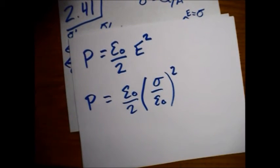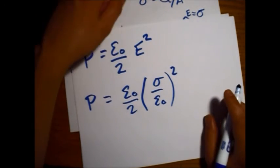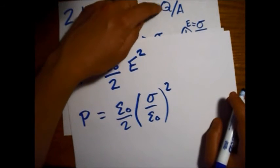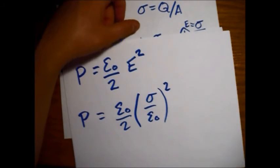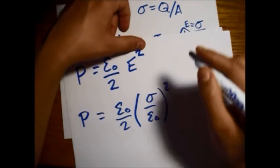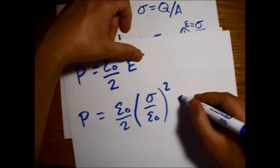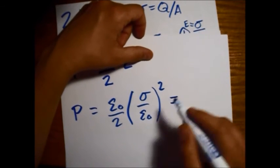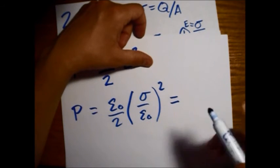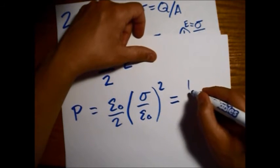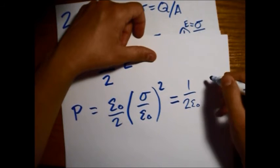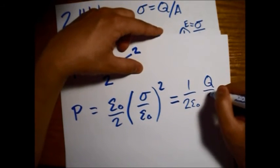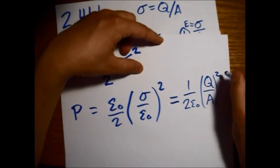Let's go ahead and simplify this and put it back into the variables given to us in the problem. So one of these epsilon-naught is going to go away. And then we have Q over A is what sigma was squared.